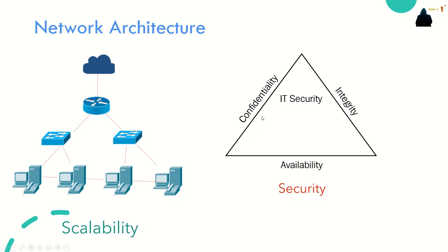Confidentiality ensures that data or an information system is accessed only by an authorized person — like your email, which only you can check using your password and username. Integrity ensures that data or an information system can be trusted. Availability ensures that data and information systems are accessible when required, using the internet, extranet, intranet, and similar services.